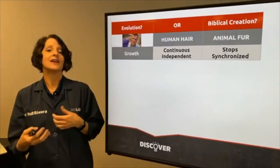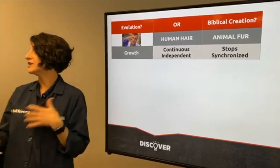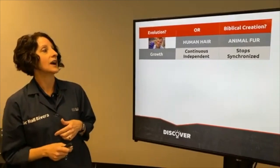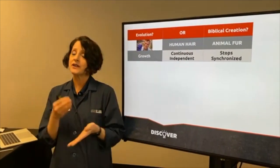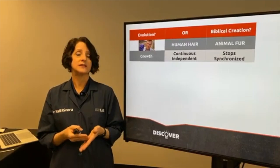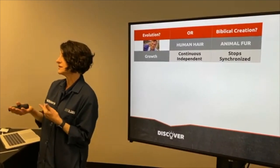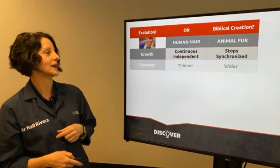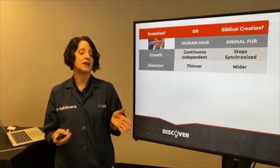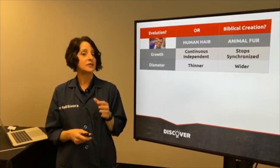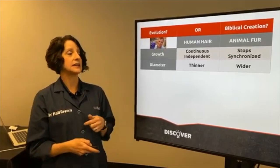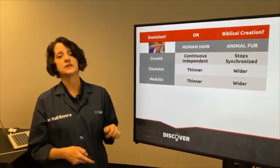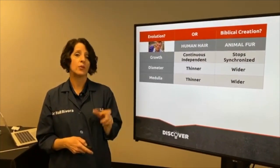Does a cow need to go to the hair salon? No — God equipped them to have their hair stop at a very specific point. Also, in humans the diameter or thickness of our hair is much thinner than we see in animals. Our medulla patterns are thinner too — animals have a much wider and more prominent medulla. As for texture, in humans our hair is soft and has the potential to grow very long, but in animals it is coarse and often very short.